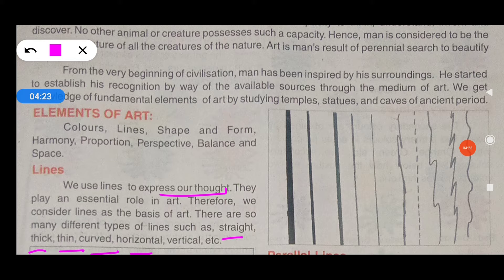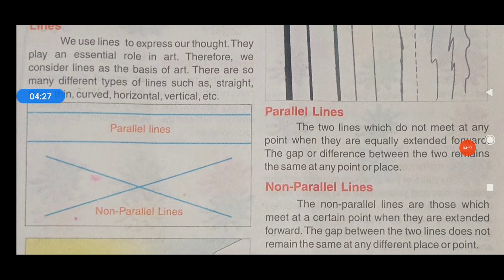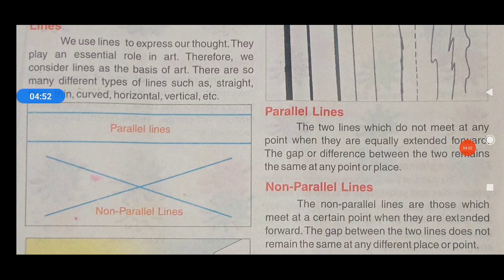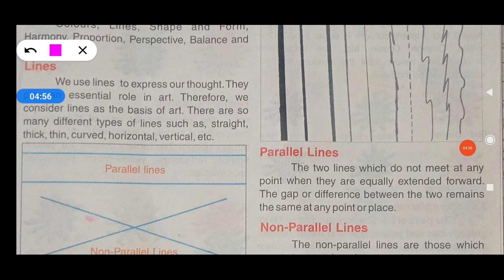These are simple lines. These are parallel lines and non-parallel lines. The two lines which do not meet at any point, when they are equally extended forward, the gap or difference between the two remains the same at any point or place — these are parallel lines.